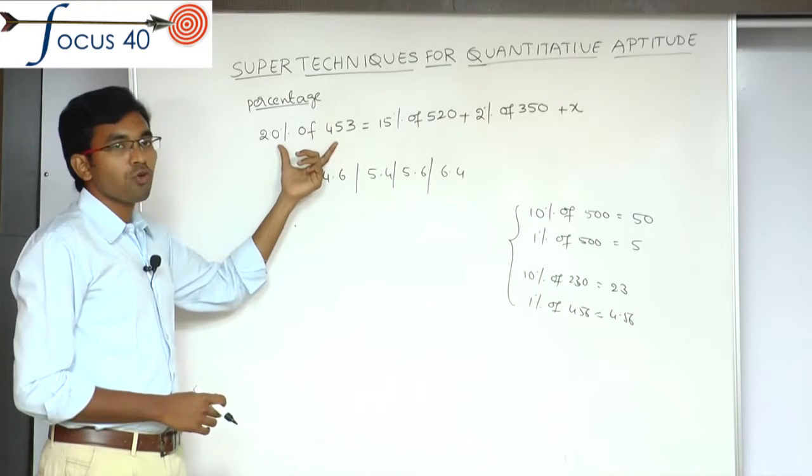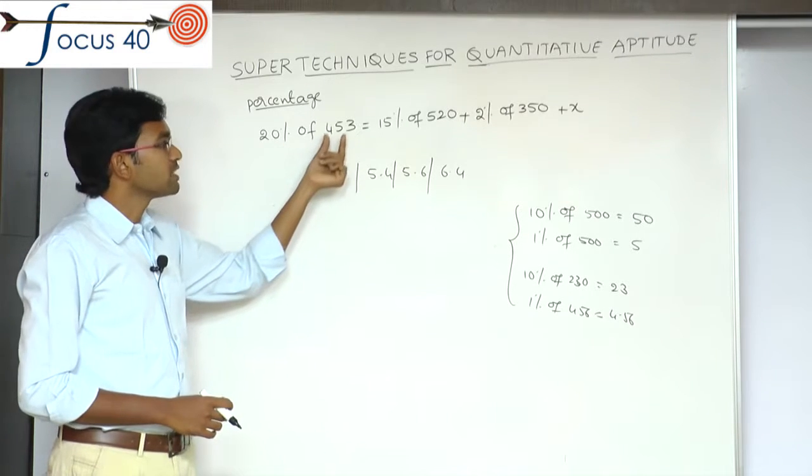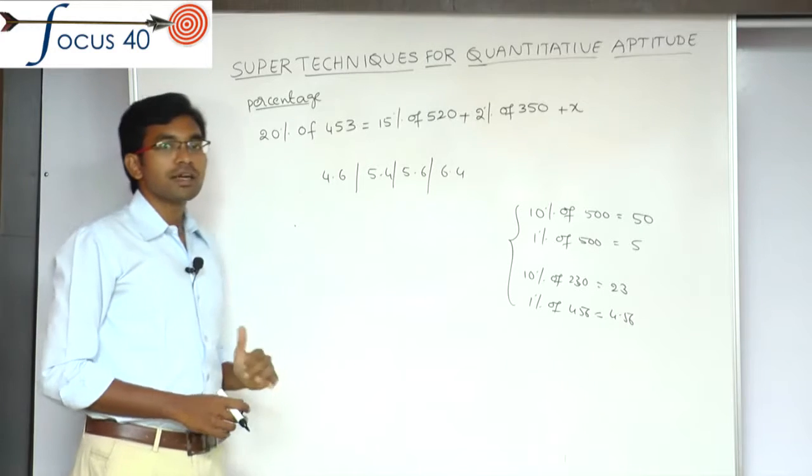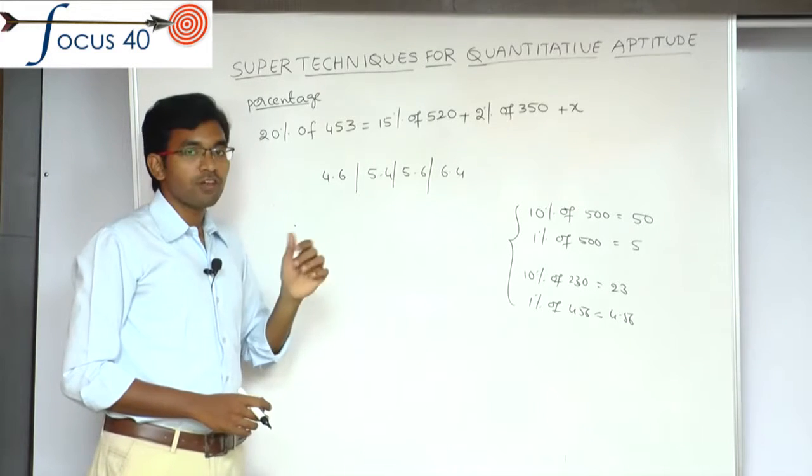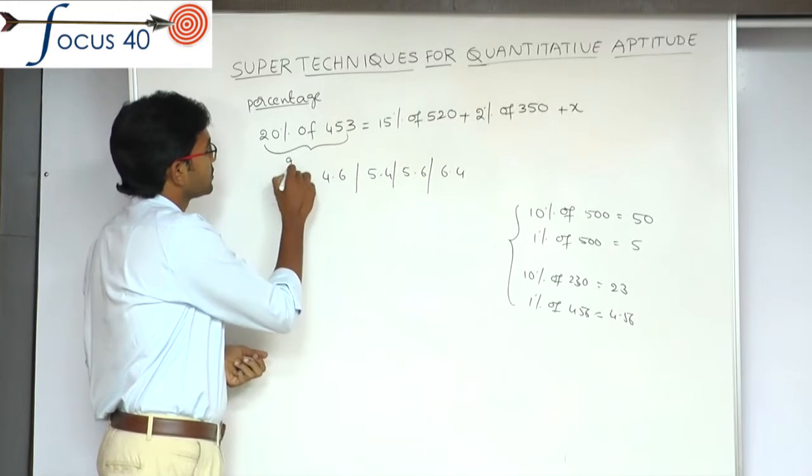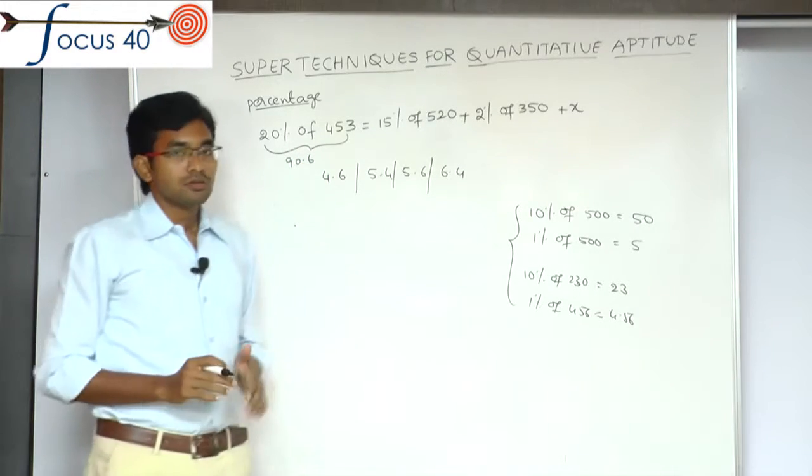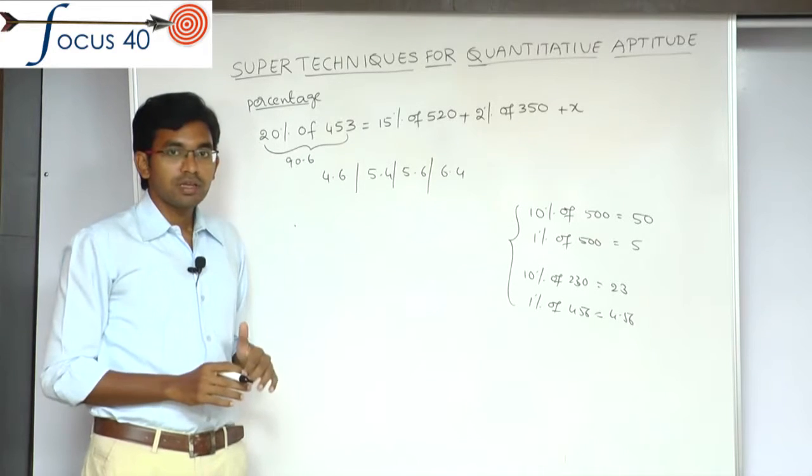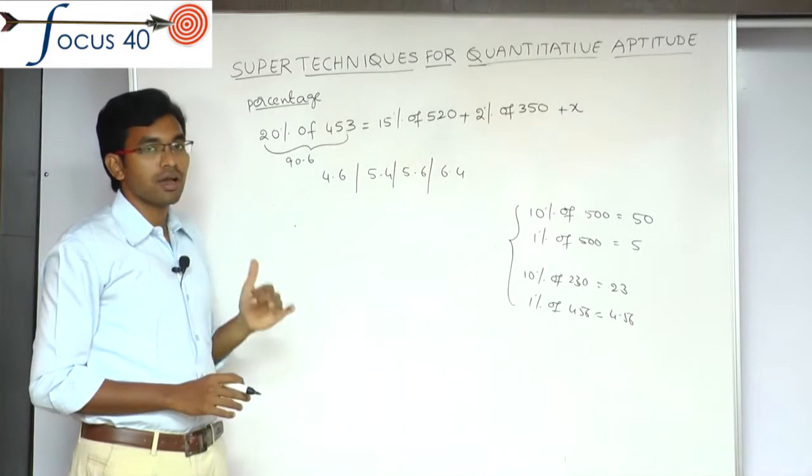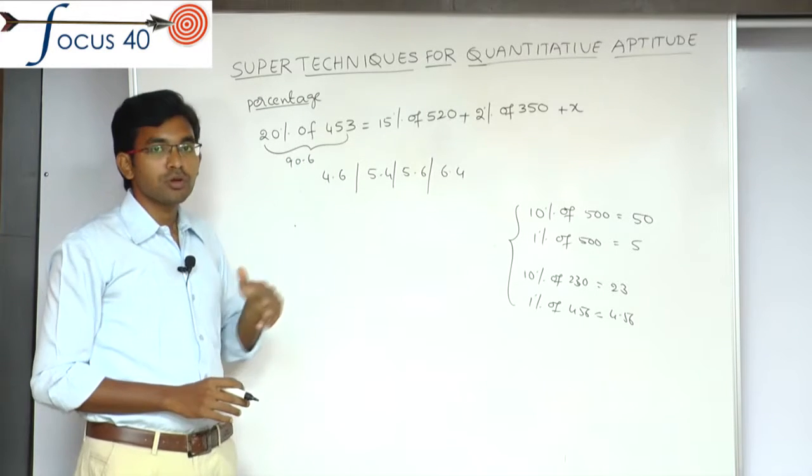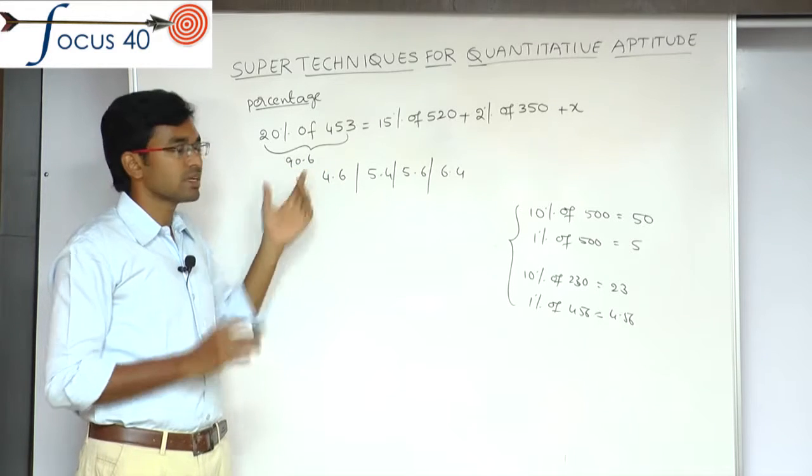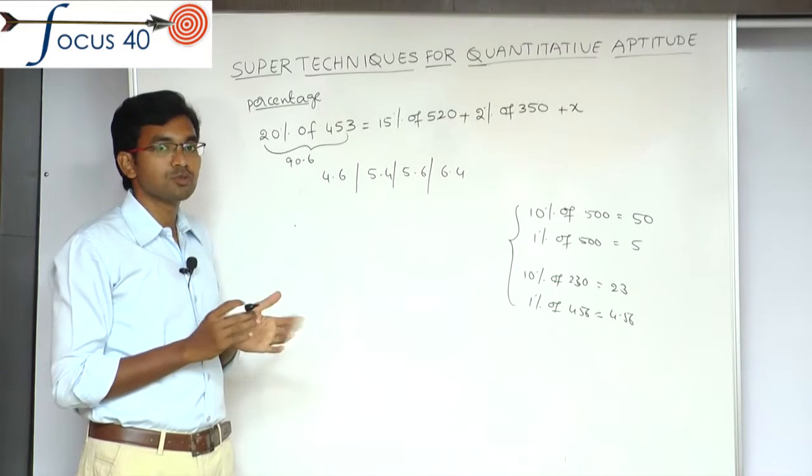20% of 453. What is 10% of 453? 45.3. Since 20% is double of 10%, 45.3 doubled is 90.6. So this part is 90.6. We don't need to expand anything. We can directly write the answer, whereas the other method requires writing 20 by 100 into 453 and solving it. That is the time gap between these two methods.